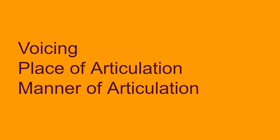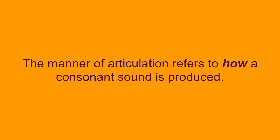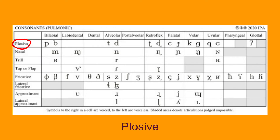Finally, let's talk about manner of articulation. The manner of articulation refers to how a consonant sound is produced. In this chart, the rows denote manners of articulation. There are plosive, which refers to blocking the vocal tract at a specific place of articulation and then suddenly releasing it. Nasal, which refers to blocking the vocal tract at a specific place of articulation but letting air escape through the nose.